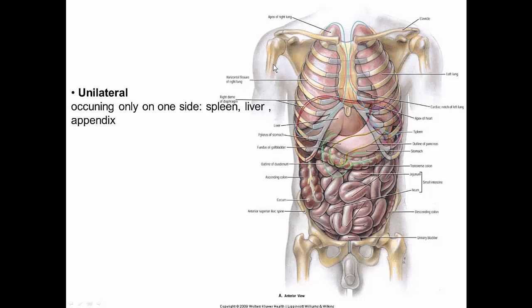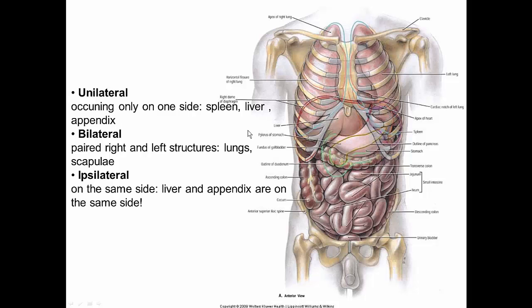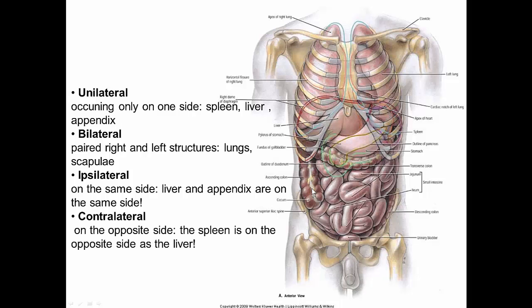Terms of laterality describe sidedness. Unilateral means only on one side — examples include the liver, the spleen, and the appendix. Bilateral refers to paired structures such as the lungs, scapulae, or clavicles. Ipsilateral means on the same side — the liver and appendix are ipsilateral. Contralateral means on opposite sides — the spleen is contralateral to the liver.